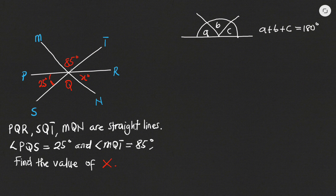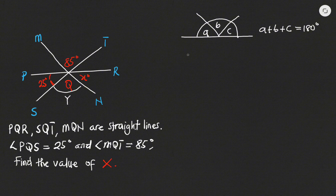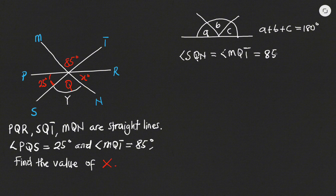Now, the angle 85 over here is vertically opposite to angle SQN. So I'll represent angle SQN as Y. Since vertically opposite angles are equal, angle SQN equals angle MQT, which is therefore equal to 85 degrees. So our angle Y is 85 degrees.